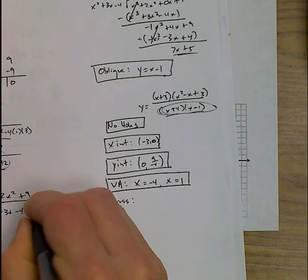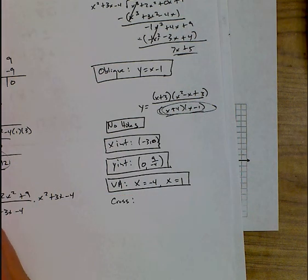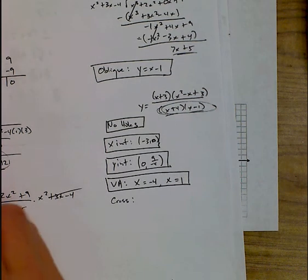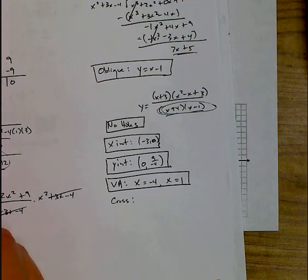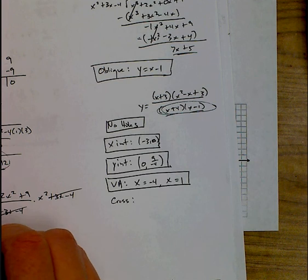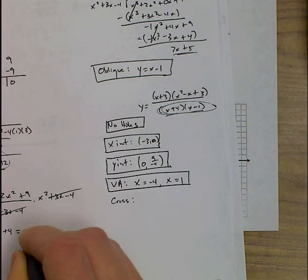And so we want to see if they are crossing, so we're going to set them equal to each other and see if they intersect. So we're going to set x minus 1 equal to... It'll be easier if we do this one. Alright, so we're going to multiply by the denominator. So those cancel. We have to distribute here.